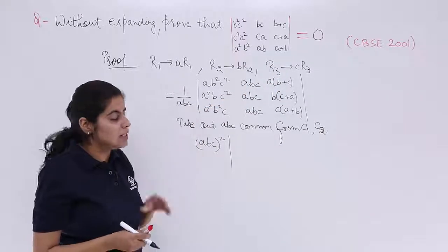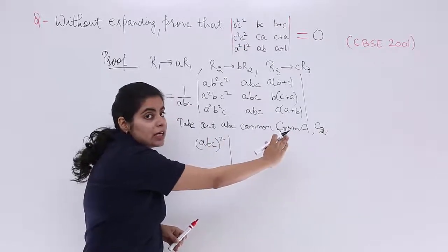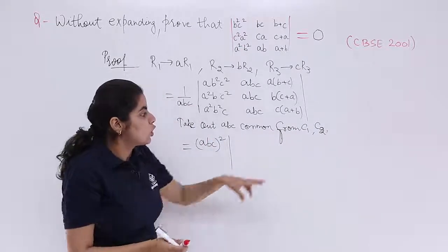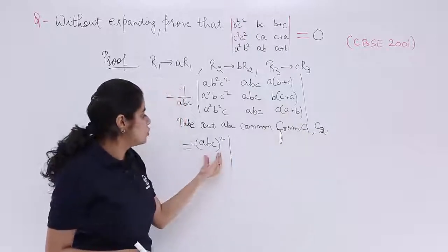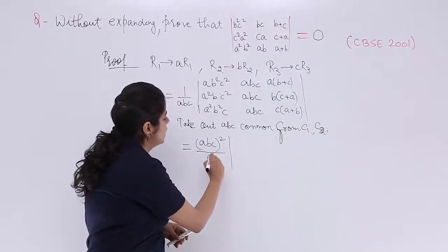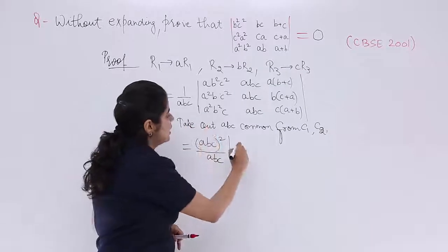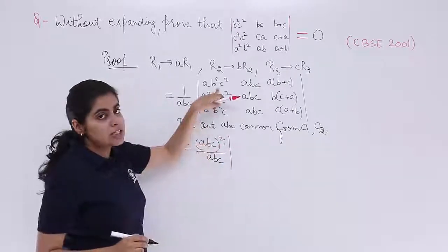So it is divide by ABC here and this multiplying and taking out commons will go on. Common from C1, common from C2. So 2 times ABC, here it is 1, ABC of this one. Inside things will be changing.